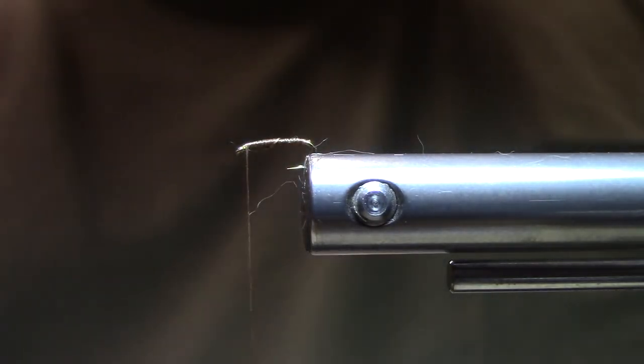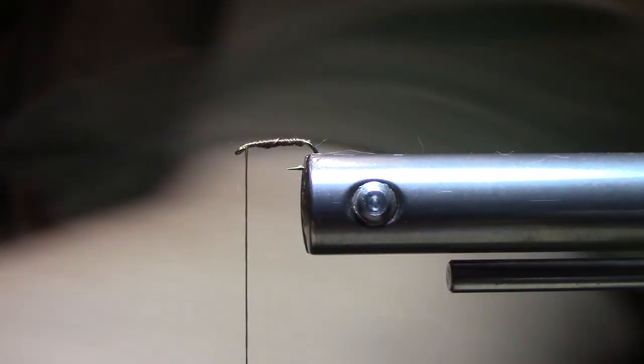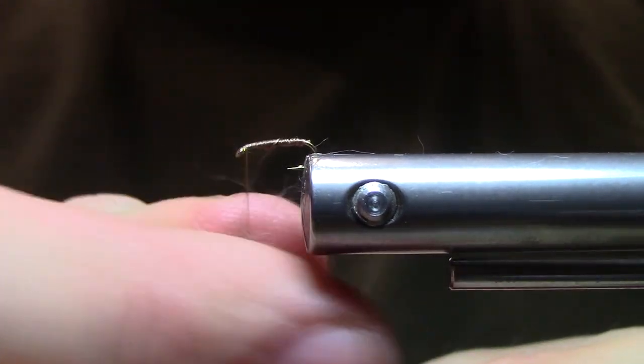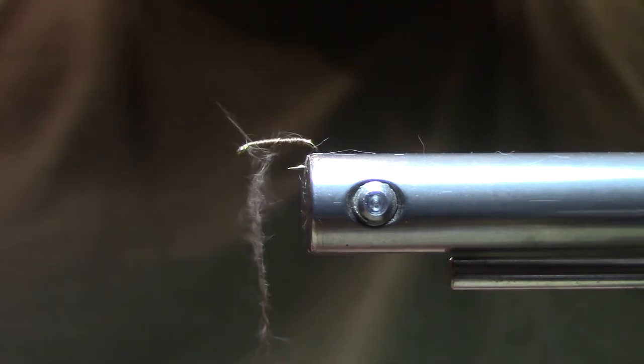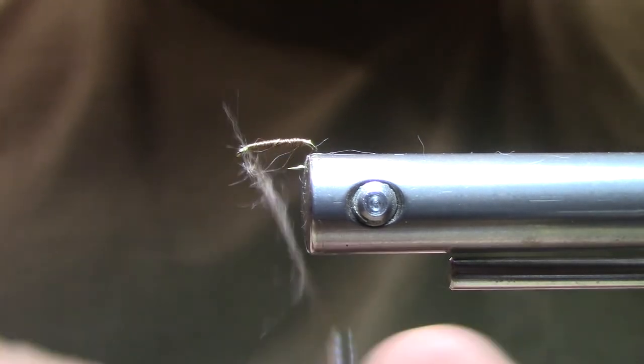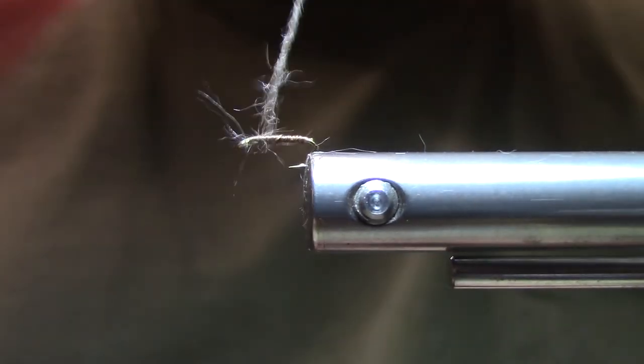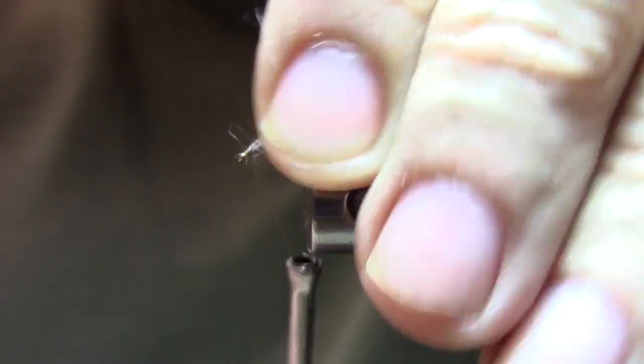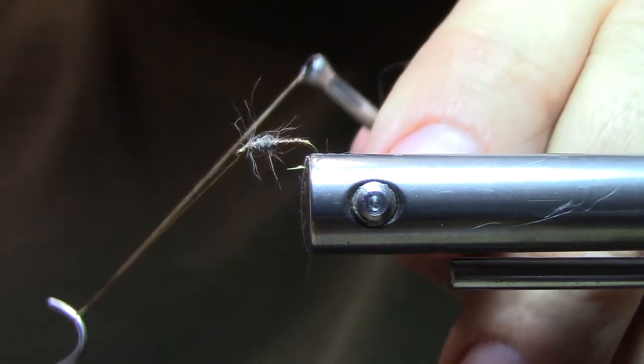All right, so now we will dub the fly again. Just a pinch of muskrat underfur. Really do not need much at all. You don't want to overdub this fly. That looks good. Sweep everything back a couple turns in front and go right into a three or four turn whip finish.